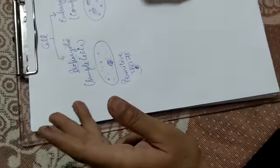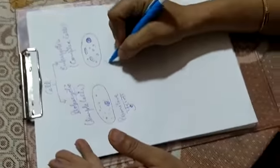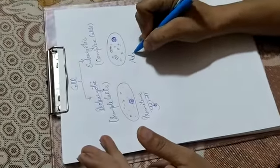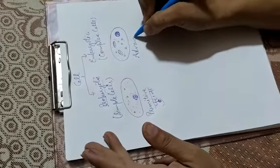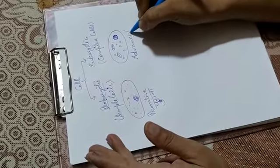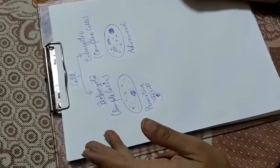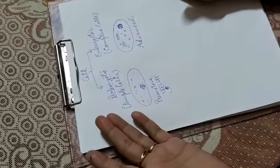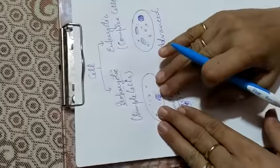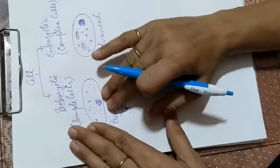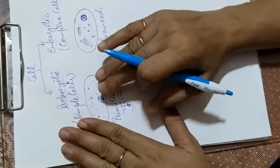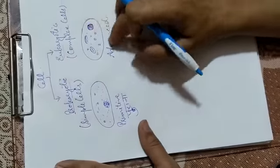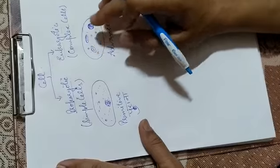Eukaryotic cell is an advanced cell. It is more developed. And from that prokaryotic cell, through development, came the eukaryotic cell.